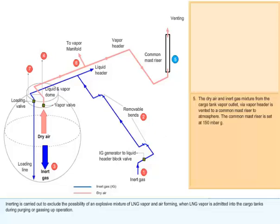The dry air and inert gas mixture from the cargo tank vapor outlet via vapor header is vented to a common mast riser to atmosphere.